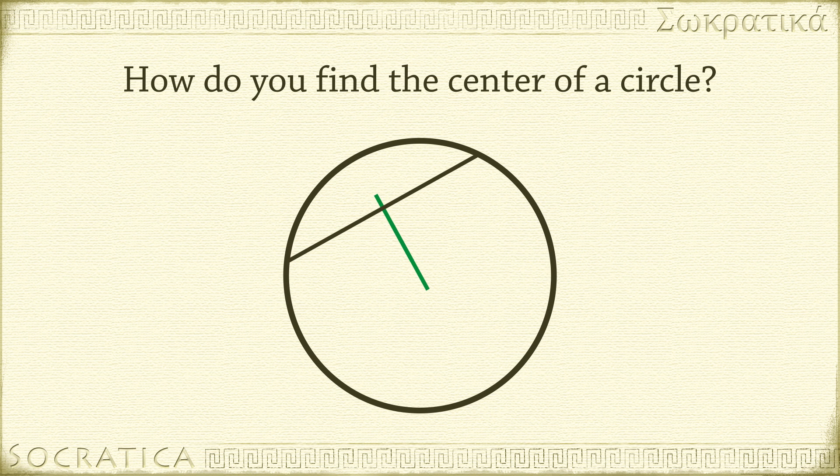To do this, we draw a second chord. Next, construct the perpendicular bisector of this new chord. Since each perpendicular bisector passes through the center, the point of intersection of the bisectors is the center of the circle.